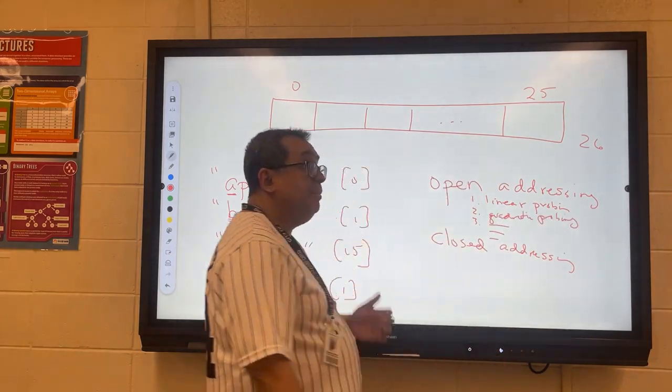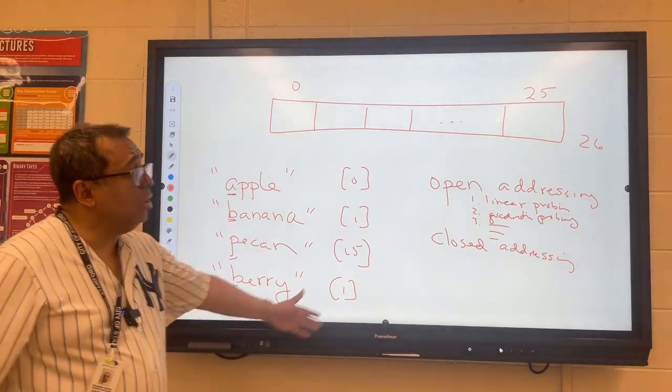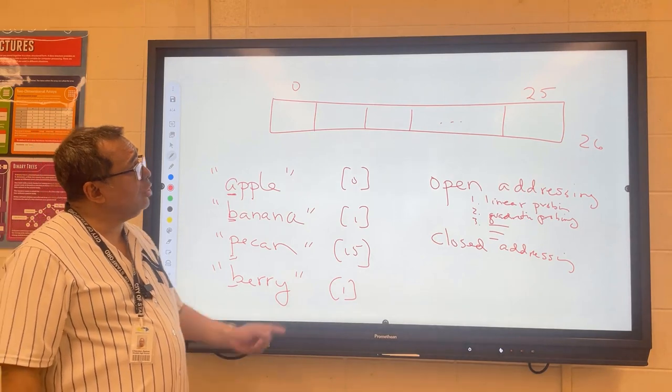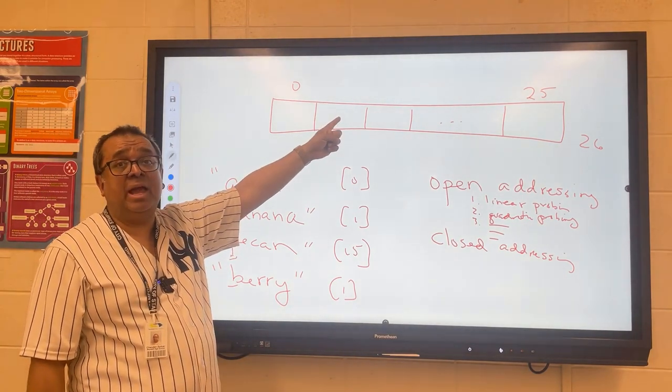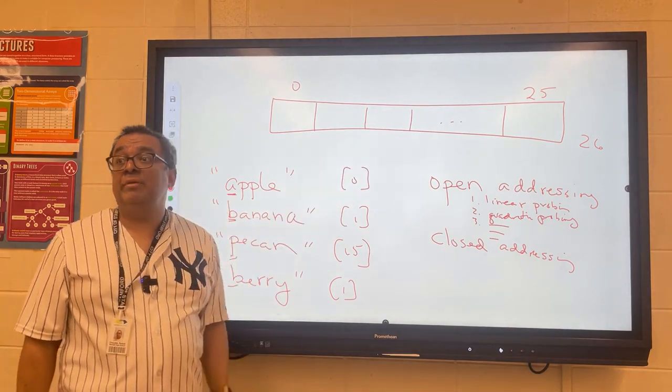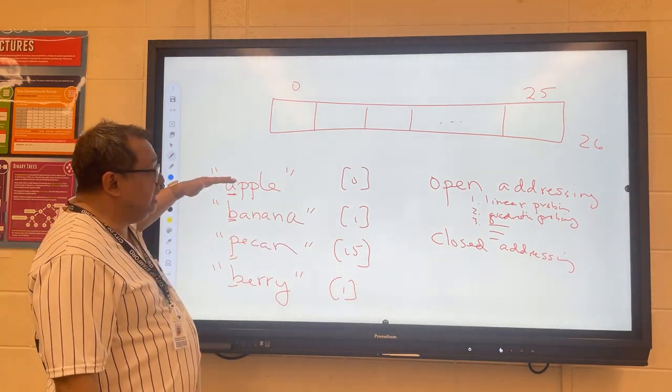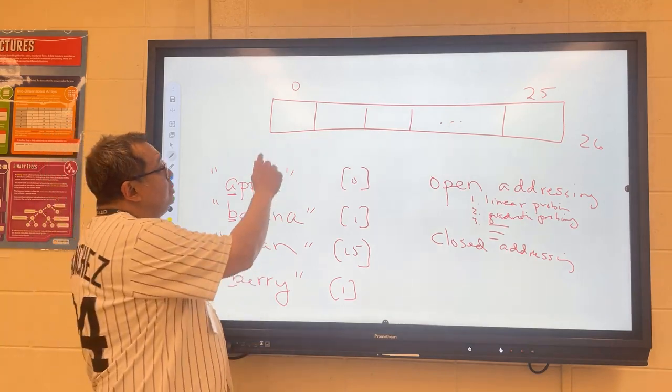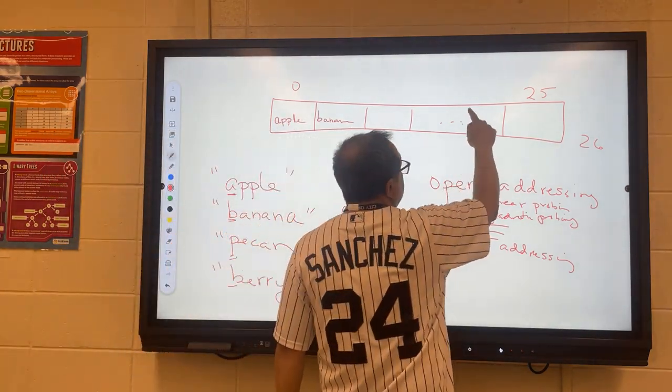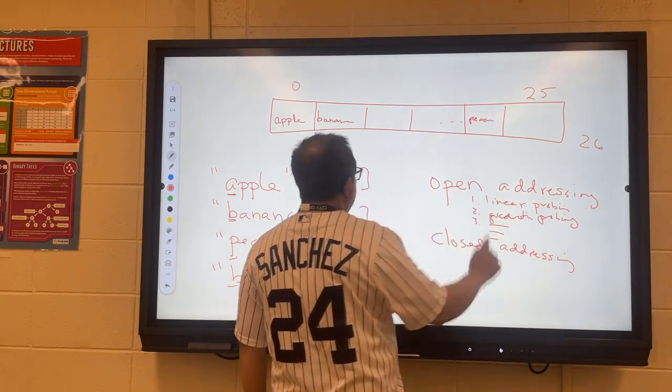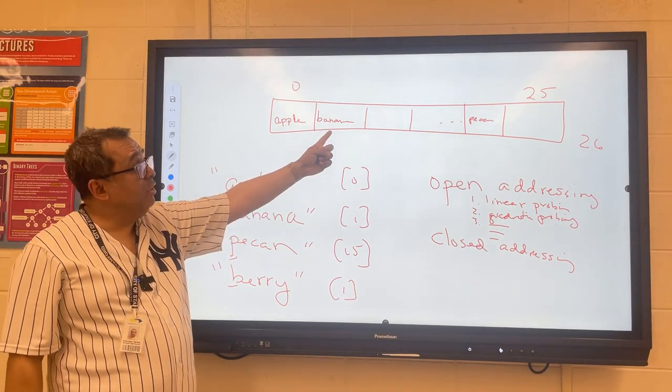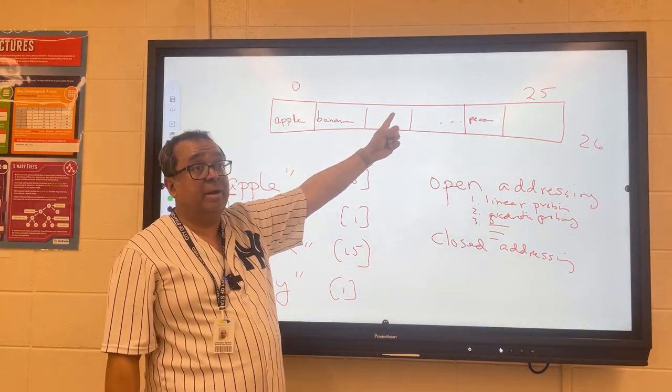That's called linear probing. Another technique which we won't really talk about very much is called quadratic probing. Linear probing is simple. All it says is that if you're going to put something into the array and the slot is used, you just find the next slot that's empty and you put it there. So in this scheme, if we were going to insert them in this order, apple would show up here, then at location 15 somewhere down here we would put pecan, and then when we had the collision with berry and banana we have no room here, so then we would just put berry into the next position right over here.